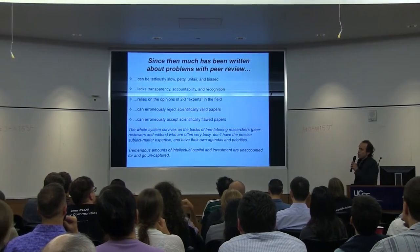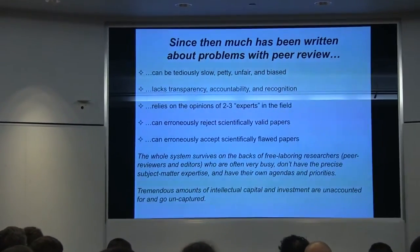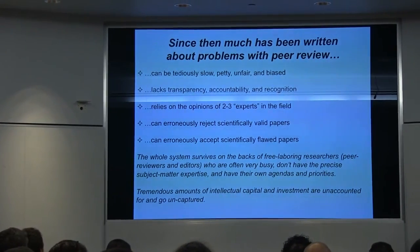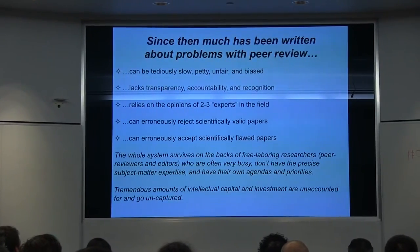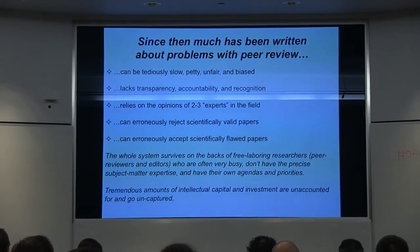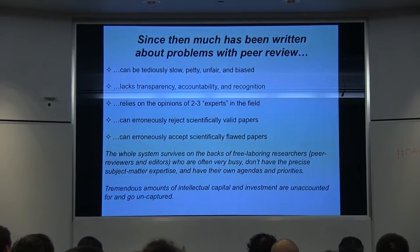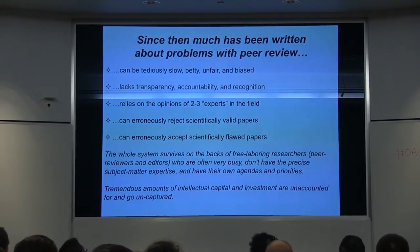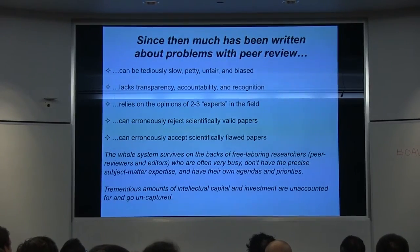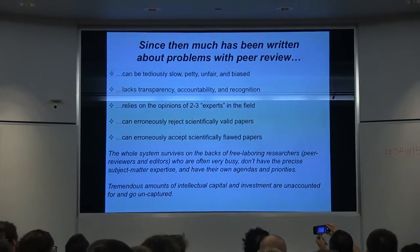As we all know, peer review can be tediously slow, petty, unfair, biased — it lacks transparency, accountability, and recognition. It generally relies on the expertise of only two or three people, who may or may not be well matched to the article they're evaluating based on who's available. We know it can erroneously reject scientifically valid papers and erroneously accept scientifically flawed papers. From a faculty member's point of view, the whole system survives on the backs of free labor from researchers, peer reviewers, and editors who are often very busy, lack precise subject matter expertise, and have their own agendas and priorities.